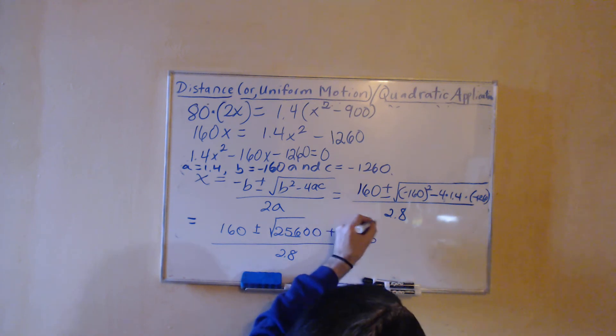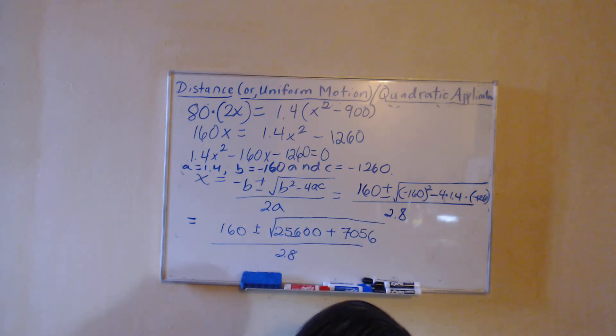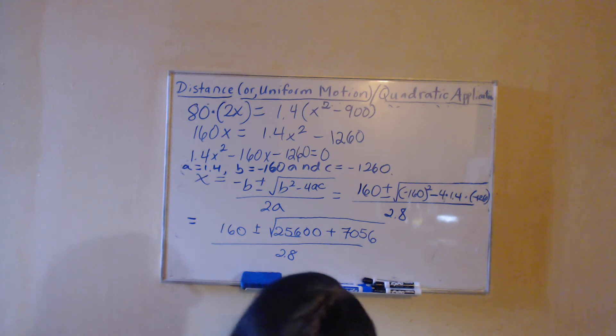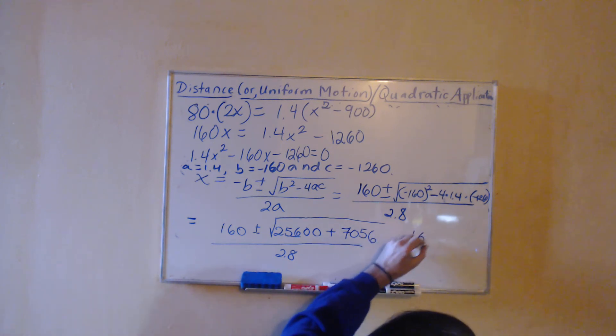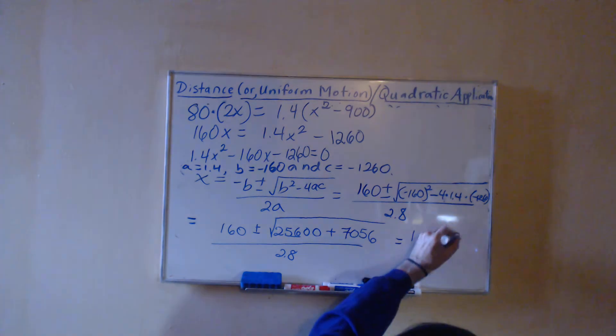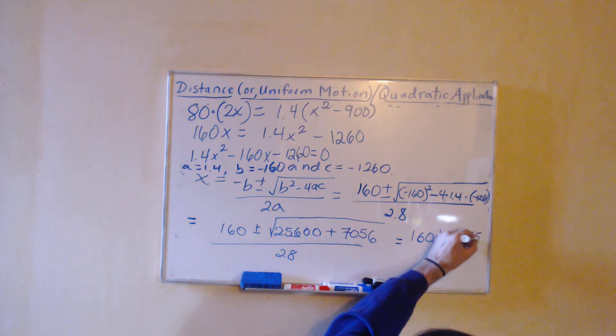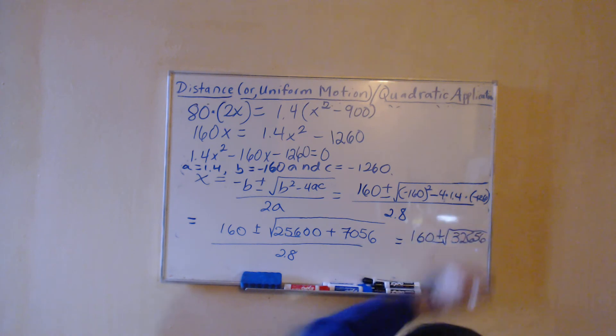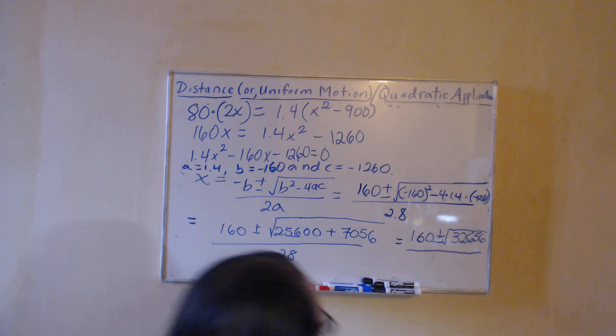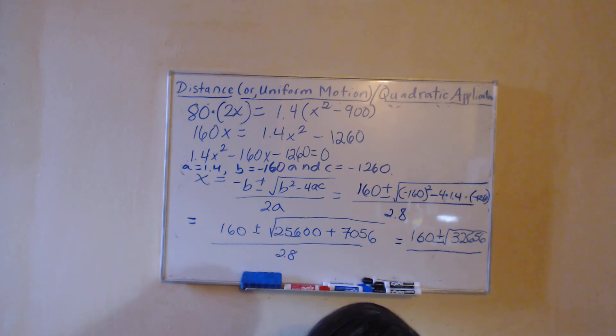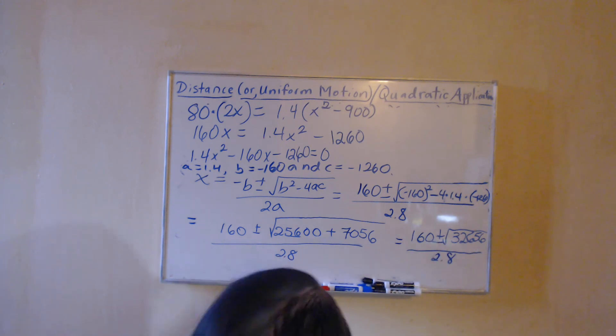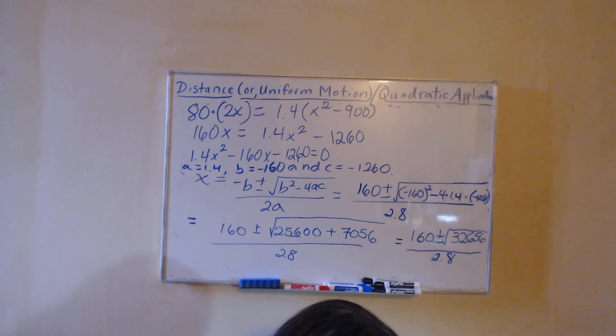That's being added to the 25,600, which is giving us 32,656 under the square root. I'm hoping that we have a perfect square but maybe we don't. We don't. It's going to give us 180.709712.